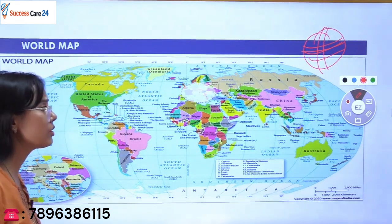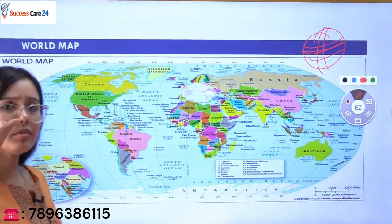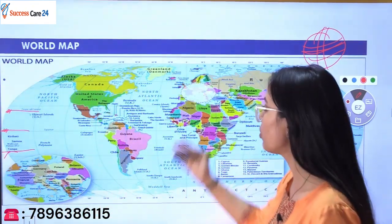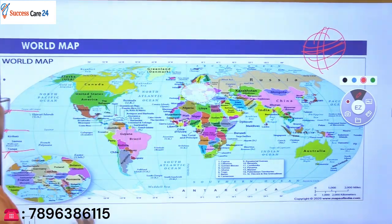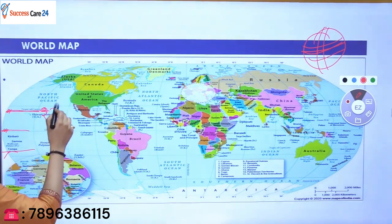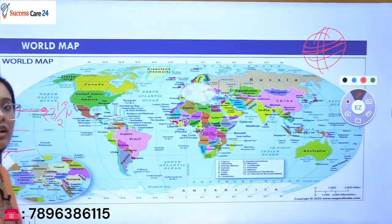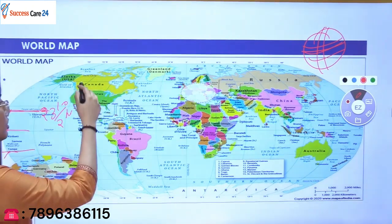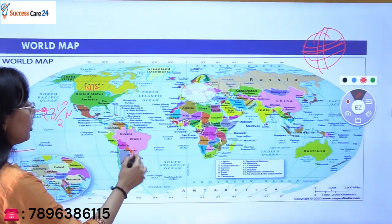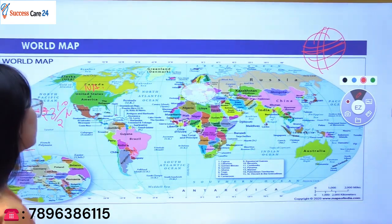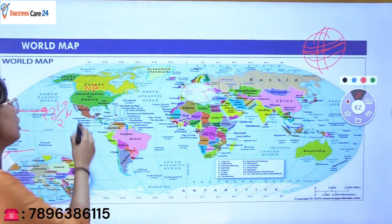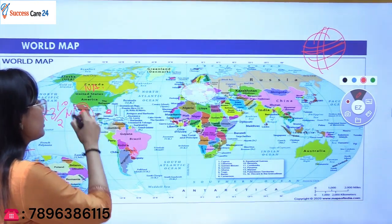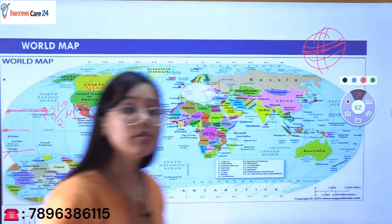First we will see the Tropic of Cancer and in which countries we can locate it. If we locate it continent-wise it won't be confusing. Let's start with the American continent. The Tropic of Cancer goes to 23.5 degrees north. This is your American continent — this is North America and this is South America. In North America, the Tropic of Cancer passes through two countries: Mexico and Bahamas.